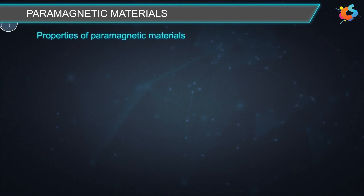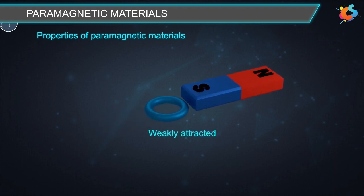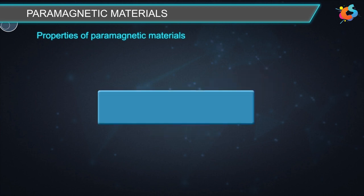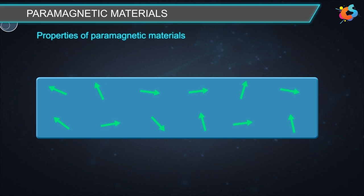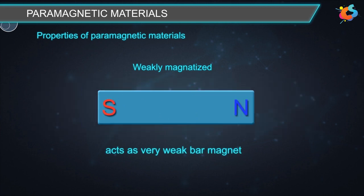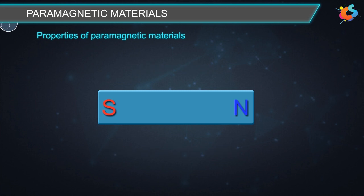Properties of paramagnetic materials. First, a paramagnetic material is very weakly attracted by a strong magnetic field. Second, when a paramagnetic substance is placed in an external magnetic field, some dipoles align in the direction of the field. The material is weakly magnetized and acts as a very weak bar magnet with north and south poles. The field lines produced by this material are in the direction of the external field inside the material, and opposite to it outside. The magnetic field appears to prefer passing through the paramagnetic material rather than air.